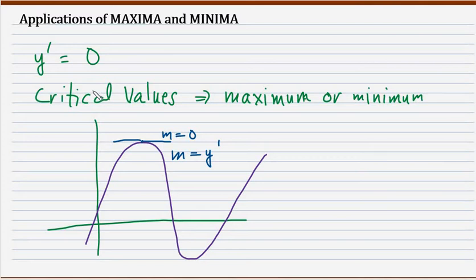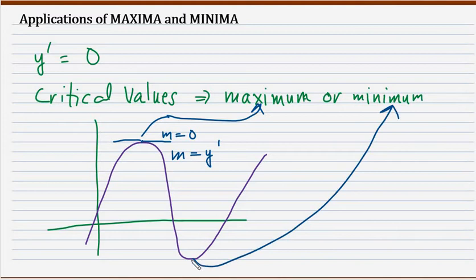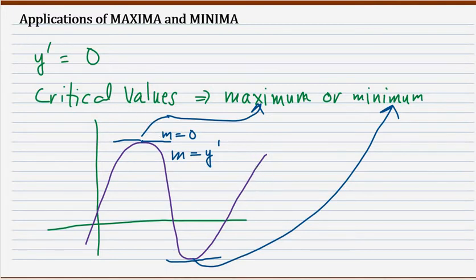So if we equate our first derivative to zero, we will get either the maximum — like in this case — or the minimum at the low point of the graph. Let's go ahead and answer some example problems regarding this.